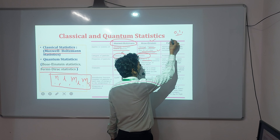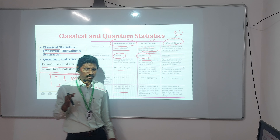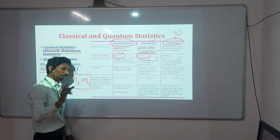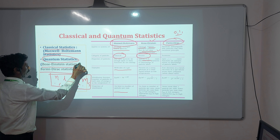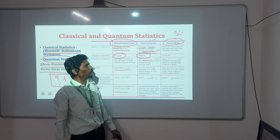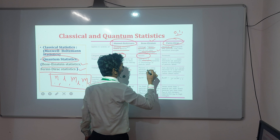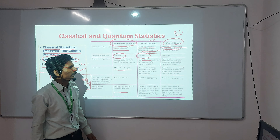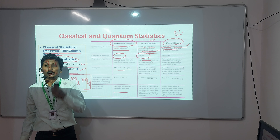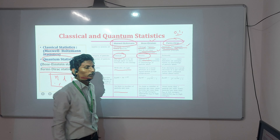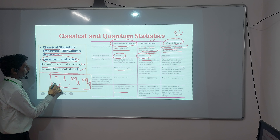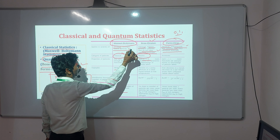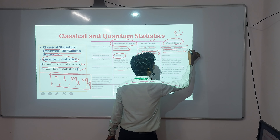The last one is Fermi-Dirac statistics. These three are different statistics, but we consider Maxwell-Boltzmann as classical statistics, while Bose-Einstein and Fermi-Dirac are quantum statistics. In Fermi-Dirac statistics, particles are identical and indistinguishable because the energy levels are very close together. However, they obey the Pauli exclusion principle, meaning no two particles can have the same four quantum numbers.